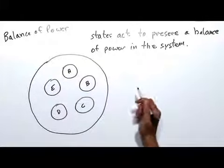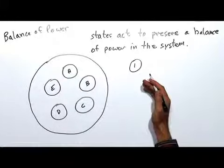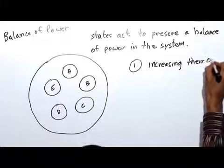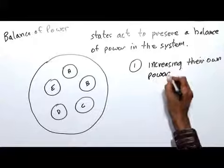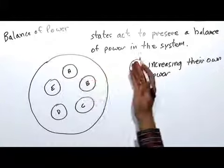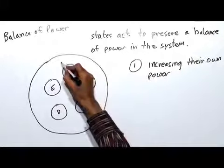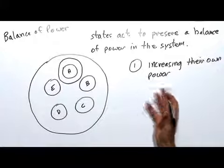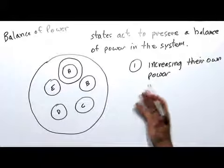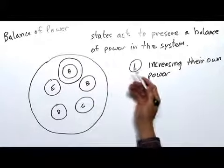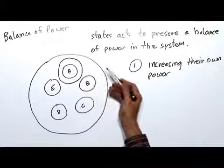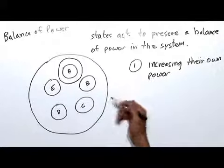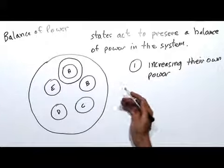Balancing can be achieved in one of two different ways. The first way states can balance against a growing power is by increasing their own power. Let's use an example. Let's say state A, for whatever reason, experiences a growth in power — perhaps a combination of economic and political reasons — and state A's power in the system is enhanced. According to the theory of balance of power, these other states are going to be nervous about that, and they're going to want to take measures to ensure that they balance against this growth in power by state A, because they don't want to see state A grow to the extent that it is capable of dominating the system or maybe even conquering all the other states.